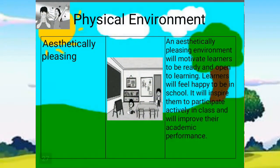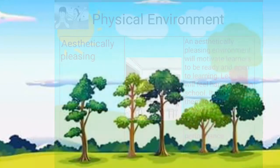Number 3 is aesthetically pleasing. An aesthetically pleasing environment will motivate learners to be ready and open to learning. Learners will feel happy to be in school — it will inspire them to participate actively in class and will improve their academic performance.